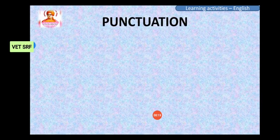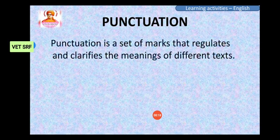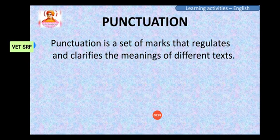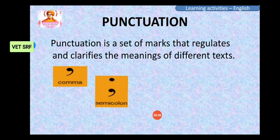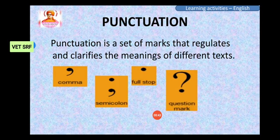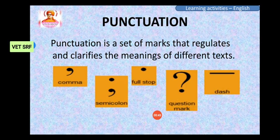Punctuation is nothing but a set of marks or symbols. With those symbols, we are going to complete our sentences or give more clarity to our sentences. I will show you some punctuation marks: comma, semicolon, full stop, question mark, dash. With the help of full stop, we are going to complete our sentences.